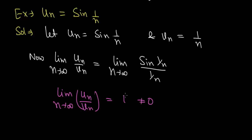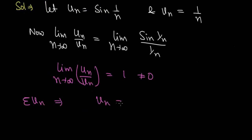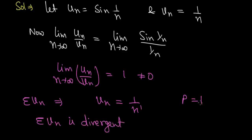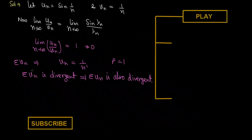For the series vₙ = 1/n, the power of n is 1, so p = 1. Since p ≤ 1, sigma vₙ is divergent. Therefore, sigma uₙ = sigma sin(1/n) is also divergent. By using the comparison test first kind, second kind, and the limit form, we can compare two series: if one is convergent or divergent, the other series will also be convergent or divergent accordingly.